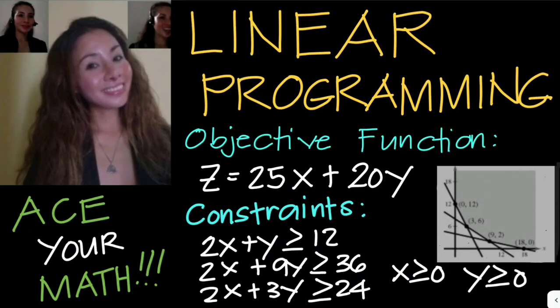This video is a continuation on solving linear programming problems where we have to solve for the optimal value of the objective function z in the form z equals ax plus by. So let's solve this problem here.